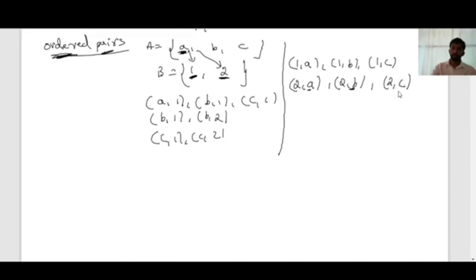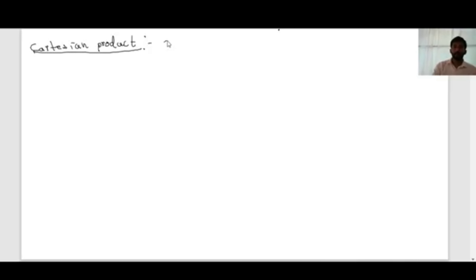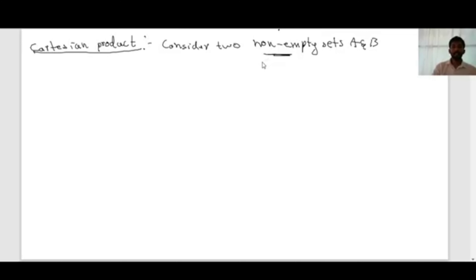Notice the order: when going from A to B, the first element belongs to set A. When going from B to A, the first element belongs to set B. To define a relation we need one concept: Cartesian product. Consider two non-empty sets A and B — non-empty means there exists at least one element. Then the Cartesian product from A to B is the set of all ordered pairs from set A to set B.